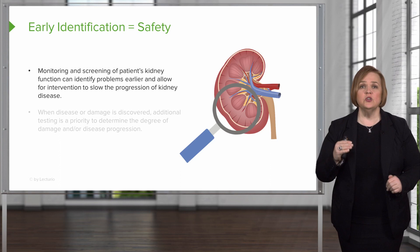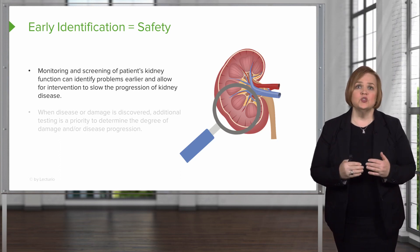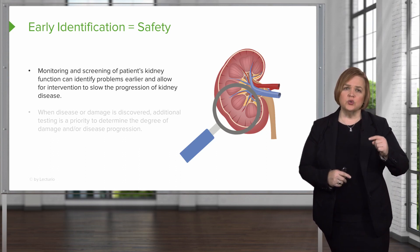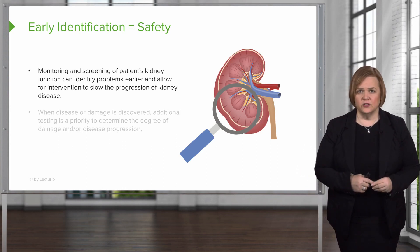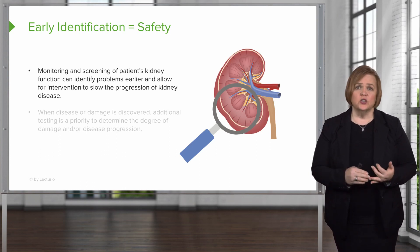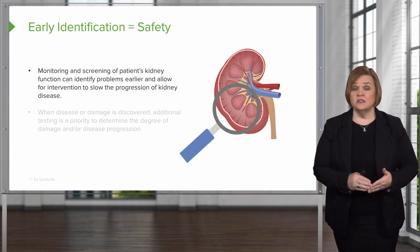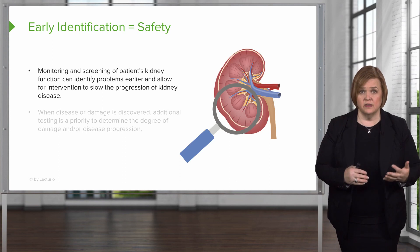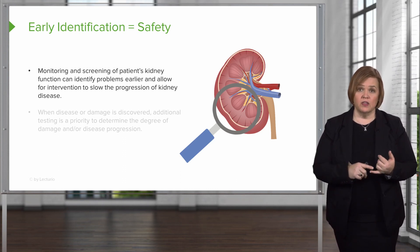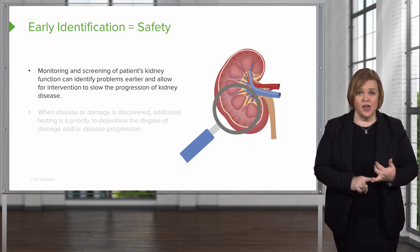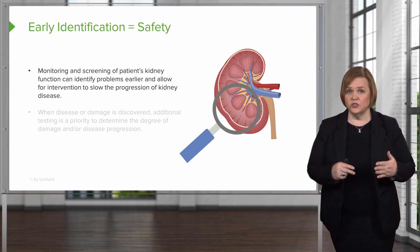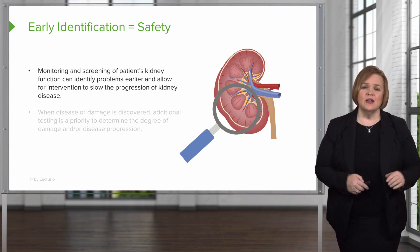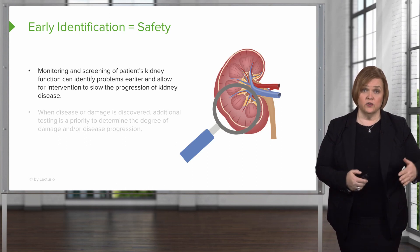Early identification equals increased safety for your patients — I can't stress enough how important that is. When you take the time to learn about the kidneys and renal function and assessments, you're going to be an excellent nurse who can advocate for their patients. A healthcare provider will look at the BUN, the creatinine, an estimate of the GFR, and a urinalysis — probably even with microscopic examination of the sediment. We play a part in making sure lab work is done correctly, and monitoring kidney function helps us identify problems earlier so we can intervene and slow the progression of kidney disease or address acute kidney injury.